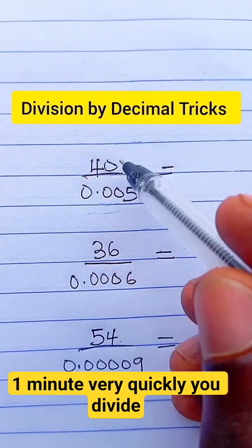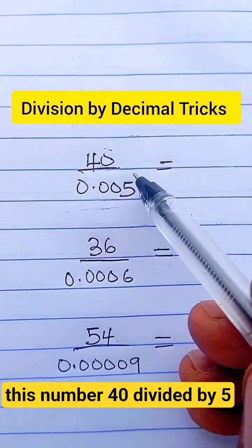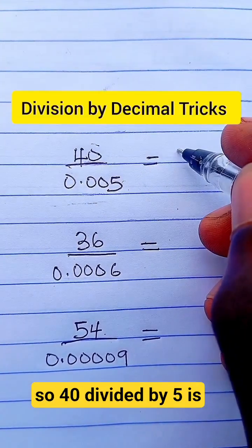Very quickly, divide this number: 40 divided by 5. So 40 divided by 5 is 8.